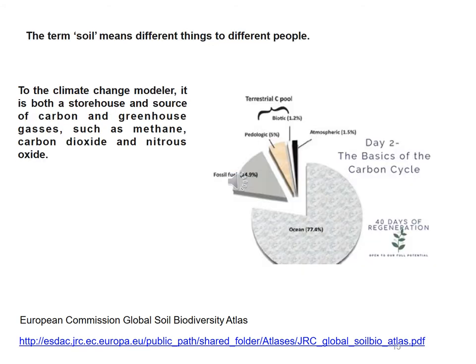To the climate change modeler, soil is both the storehouse for carbon and the source of greenhouse gases such as methane, carbon dioxide, and nitrous oxide. Soil has a lot of organic matter, largely made up of carbon, so the more organic matter in the soil, the more it stores carbon. The more we quickly harvest, turn over, or burn vegetation or soils, the more CO2 and carbon is released into the atmosphere — so it can also be a problem, adding greenhouse gases to the atmosphere.